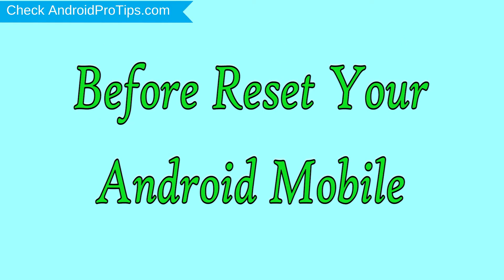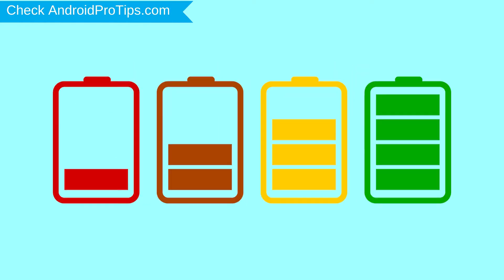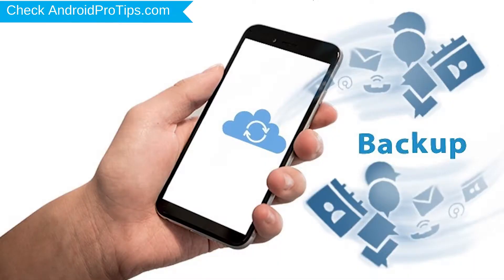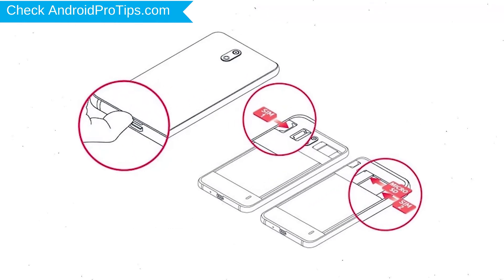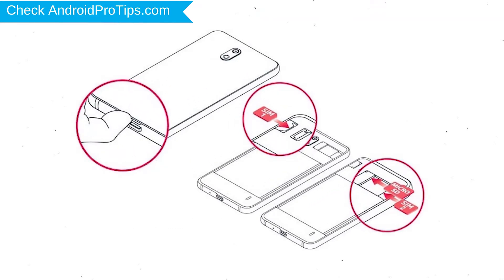Before resetting your mobile, charge your mobile if the battery is less than 50%. You need to make sure that the data on your device is backed up so you do not lose valuable photos or documents. Reset deletes all your mobile data, so you should back up all important data and remove SIMs and SD card.